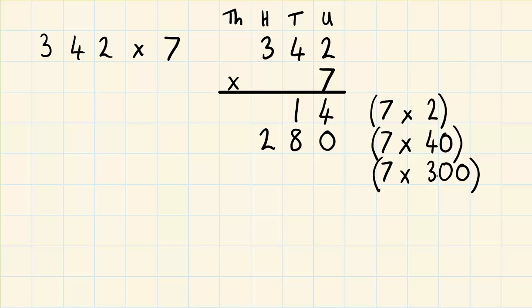Next one is 7 times 300. And this is a multiple of 100. So 7 times 3, again using our times table knowledge, is 21. So we turn that back into a multiple of 100 by adding two zeros onto the end. And that becomes 2,100.